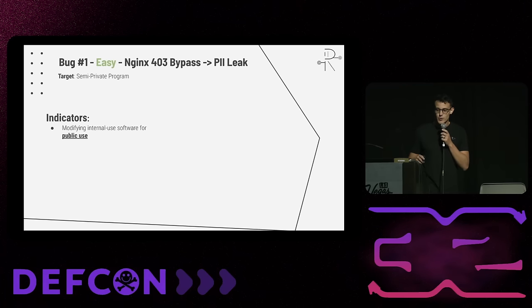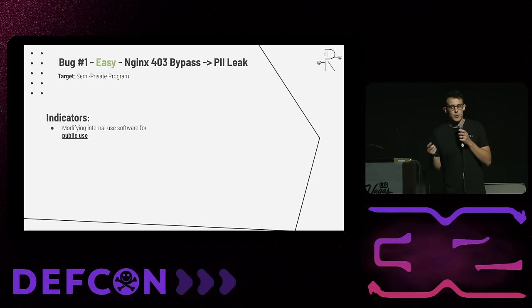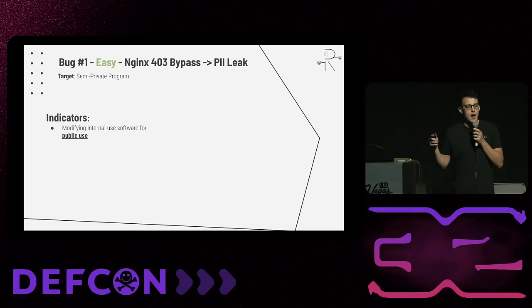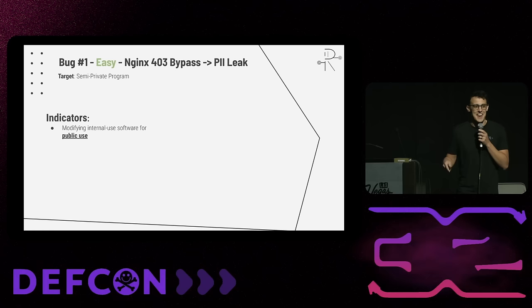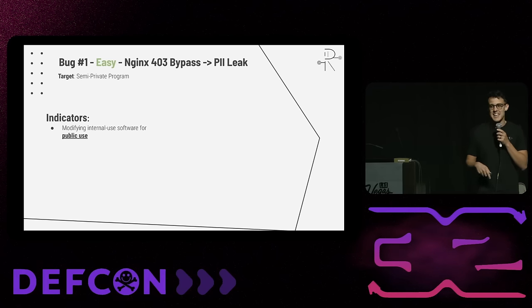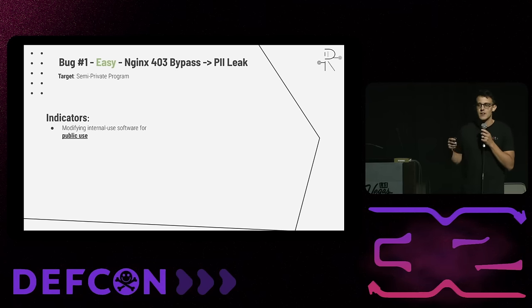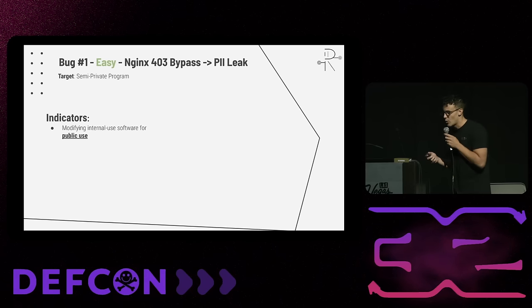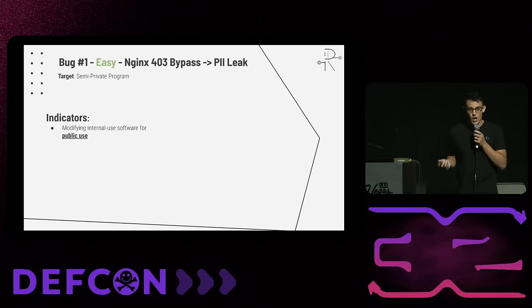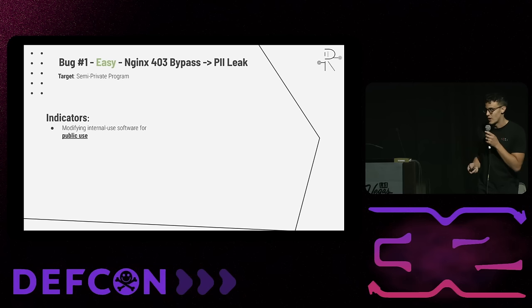First one is an NGINX 403 bypass to PII leak. This is on a semi-private program. Most of the targets I'm hacking on are public programs or semi-private programs — essentially a private program that everyone knows exists and you can easily get added to. When finding this bug, the first indicator was that the company was taking software meant for internal use and modified it to be publicly used, so anybody can sign up and log in. The threat model changes for the application.